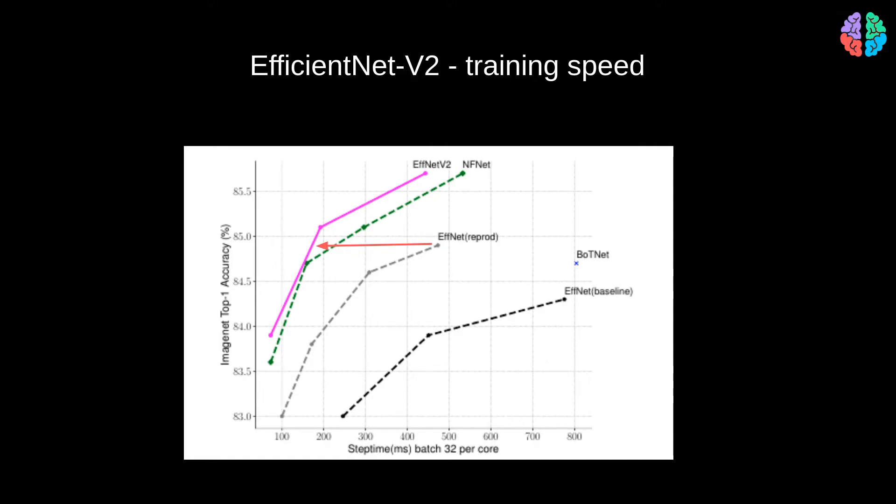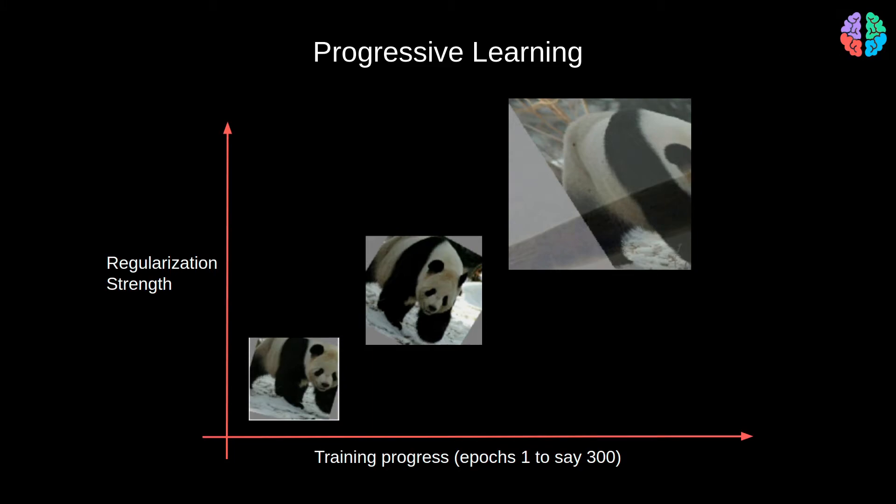The next contribution of the paper is progressive learning. The idea is fairly simple and straightforward and motivated by previous work such as progressive growing of GANs and mix and match papers. However, the main finding is that we should adjust the regularization whenever we change the image size so that we don't compromise on the accuracy. They argue that heavy regularization is needed for large images when compared to smaller images.